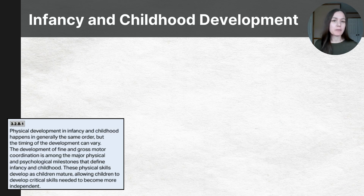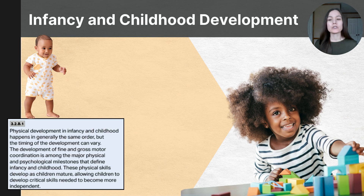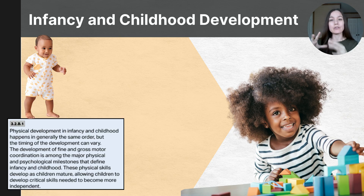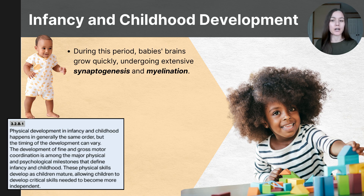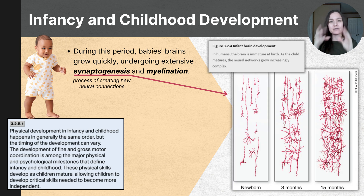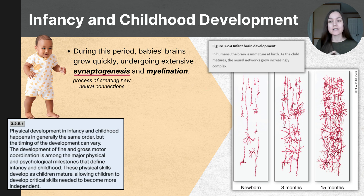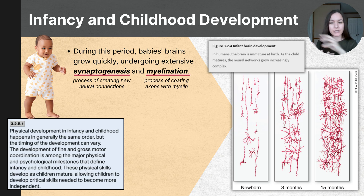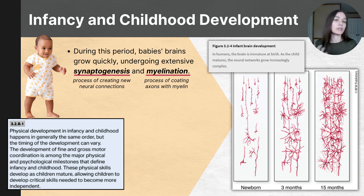By the end of infancy, most babies start to transition into the toddler stage, which lasts from about one to three years old. During infancy, the baby's brain is growing quickly and reaching about 70% of its adult size by their first birthday. The brain forms new connections between nerve cells in a process called synaptogenesis, which helps babies develop skills like seeing, hearing, moving, and learning. Another important change is myelination, where nerve fibers get coated with a protective layer of myelin, allowing them to send brain signals faster. These brain changes are what help babies begin exploring the world and learning new things.